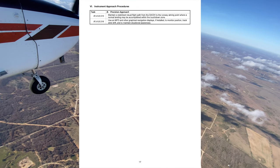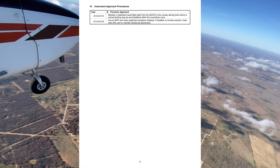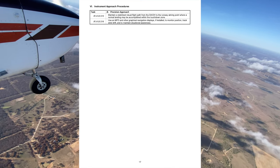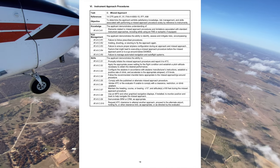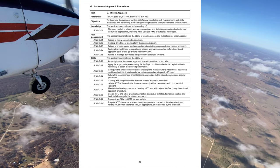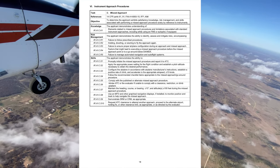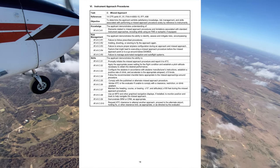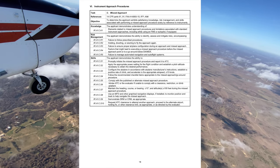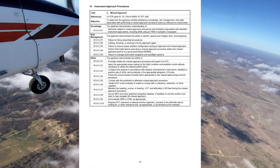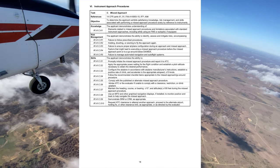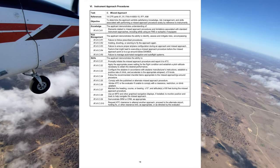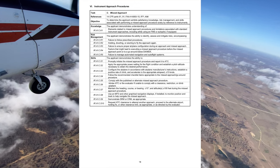Once cleared for the approach, you can descend to the minimum altitude depicted in the defined area unless instructed otherwise. For GPS approach equipment, it must be certified for IFR approaches according to the technical standard order, and you must check the aircraft's flight manual. For types of RNAV approaches — reference AIM 5-4-5 — you have LNAV, LNAV+V, LNAV/VNAV, LPV, and LP.